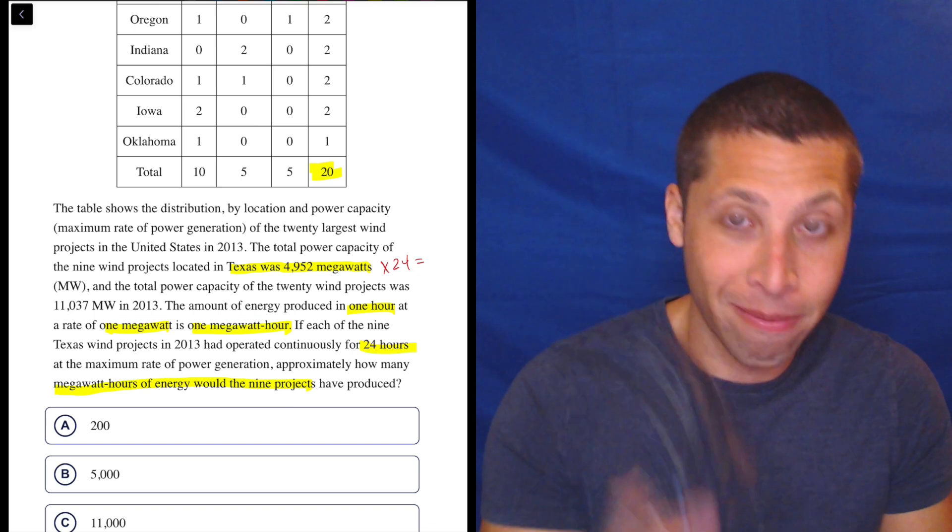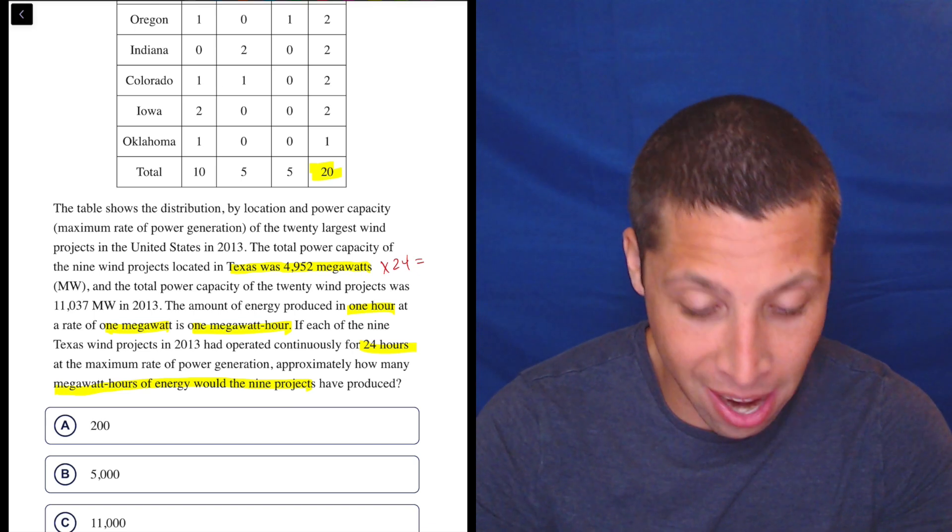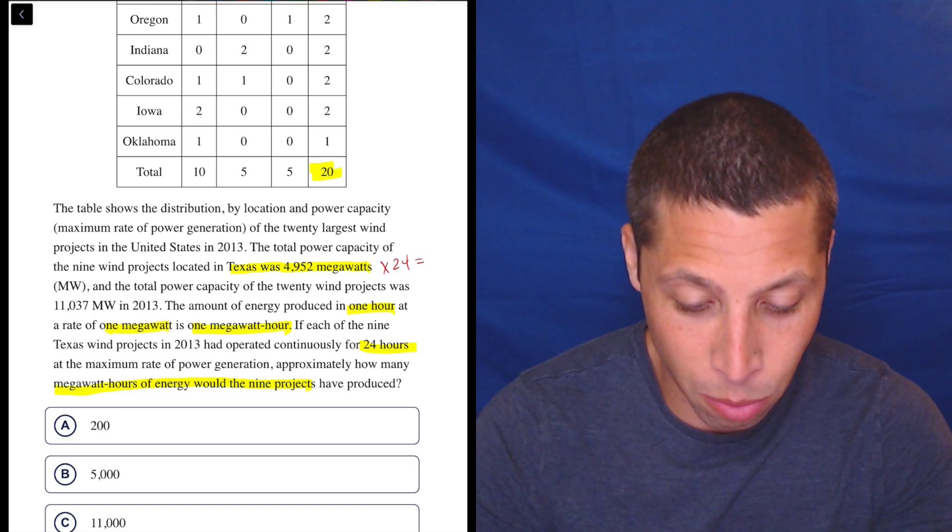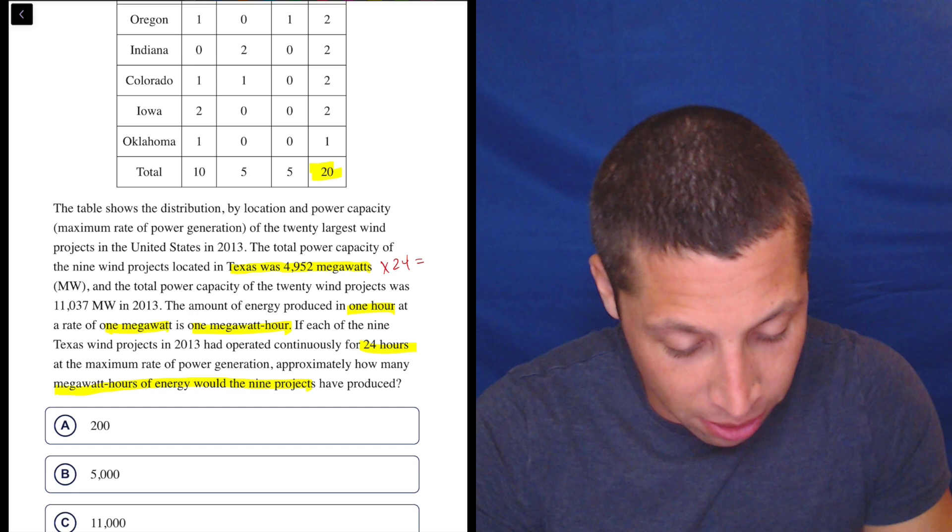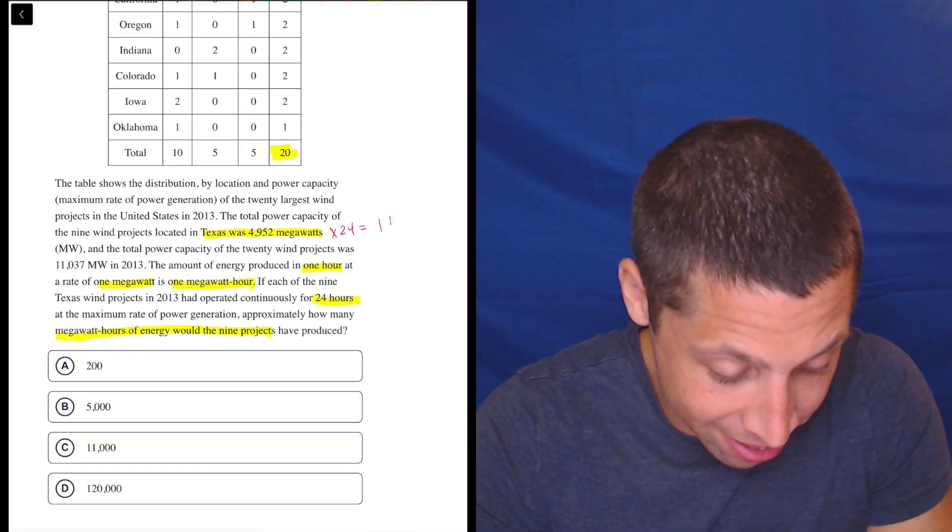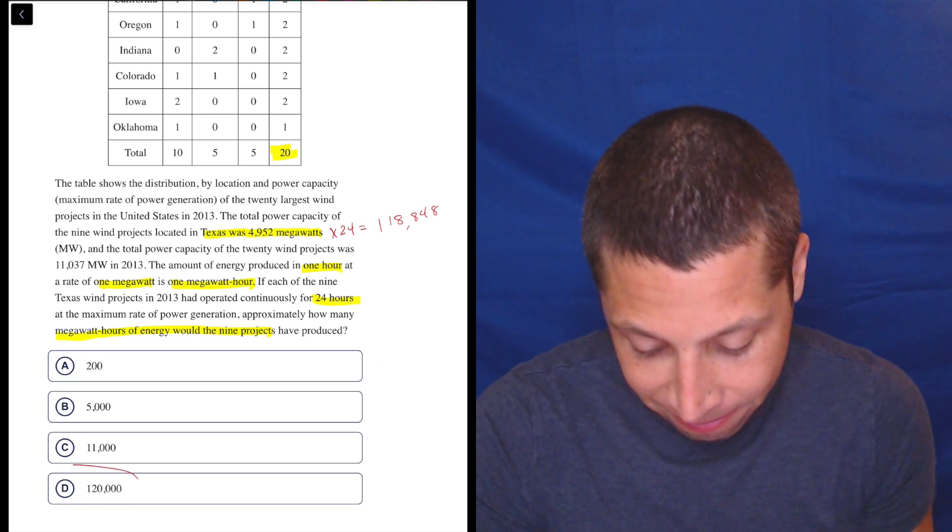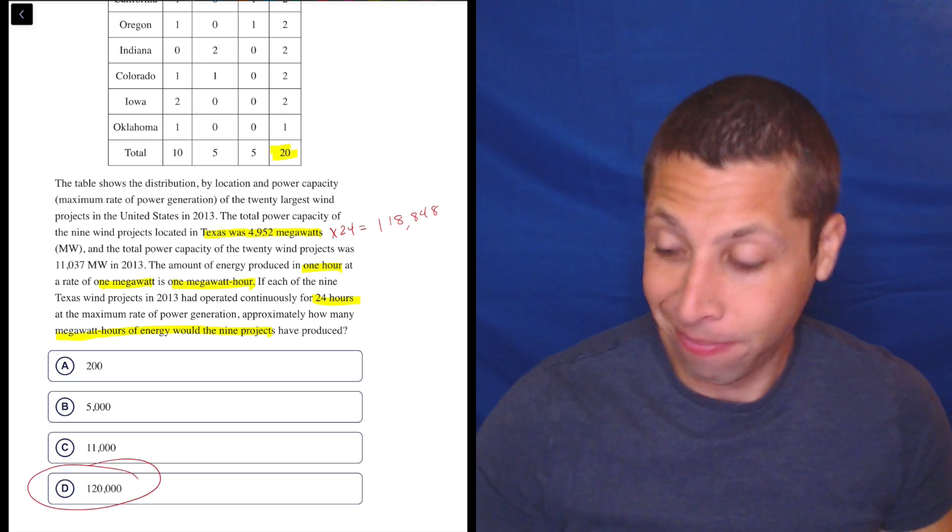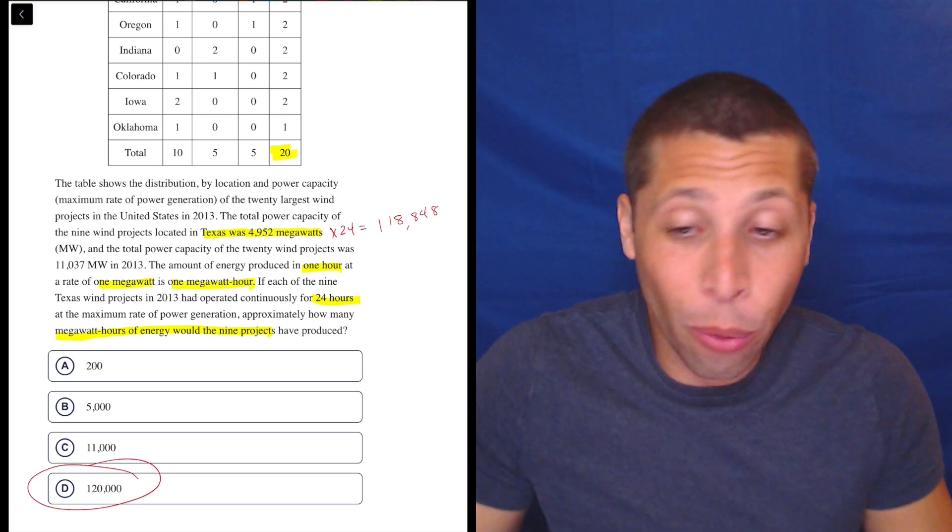And what do we get? So 4,952 times 24 is 120,000. Awesome. That's it. That's the whole thing.